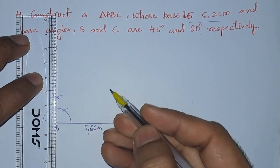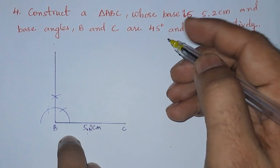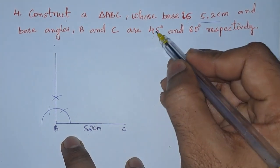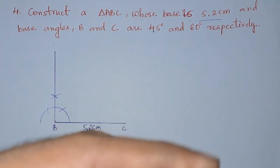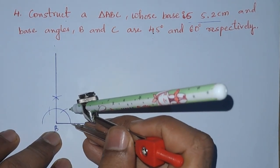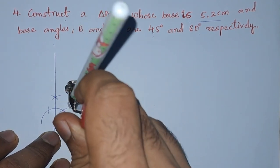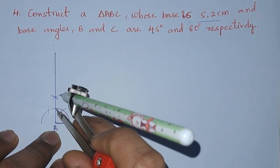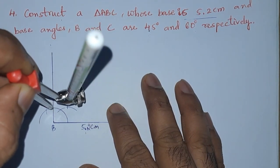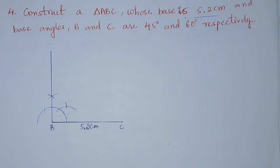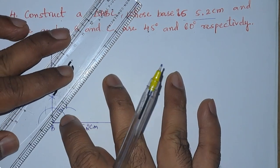We got 90 degrees, but we need 45 degrees, so we need to draw the angular bisector of this. From these two points draw the angular bisector. We now have 45 degrees here — join these two points.